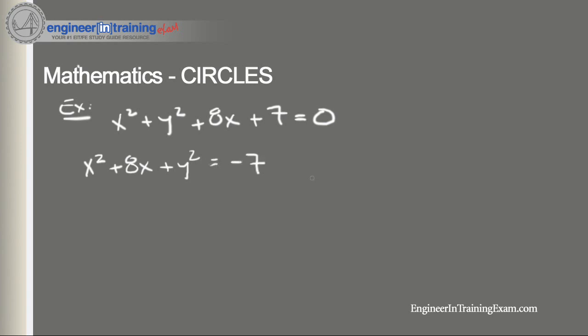And we look on the left side here and see that x is the only term, or the only variable that has two terms, so that is the only variable that we need to complete the square of.